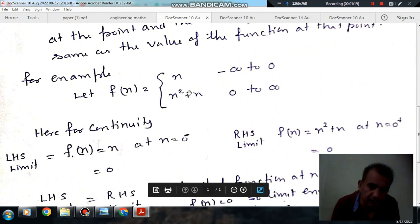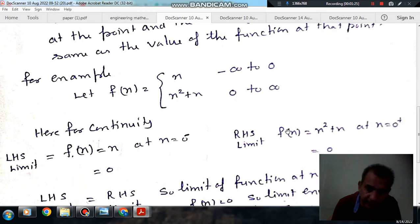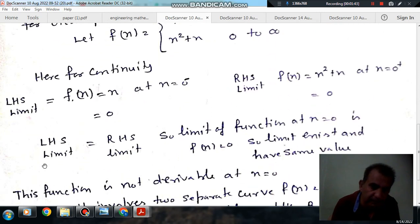Now, for continuity, the left hand limit at x equals 0 should be equal to right hand limit at x equals 0. So, if we take 0 minus then f(x) is x and we put x equals 0 then it is 0. If we put x equals 0 then the left hand limit should be equal to right hand limit.